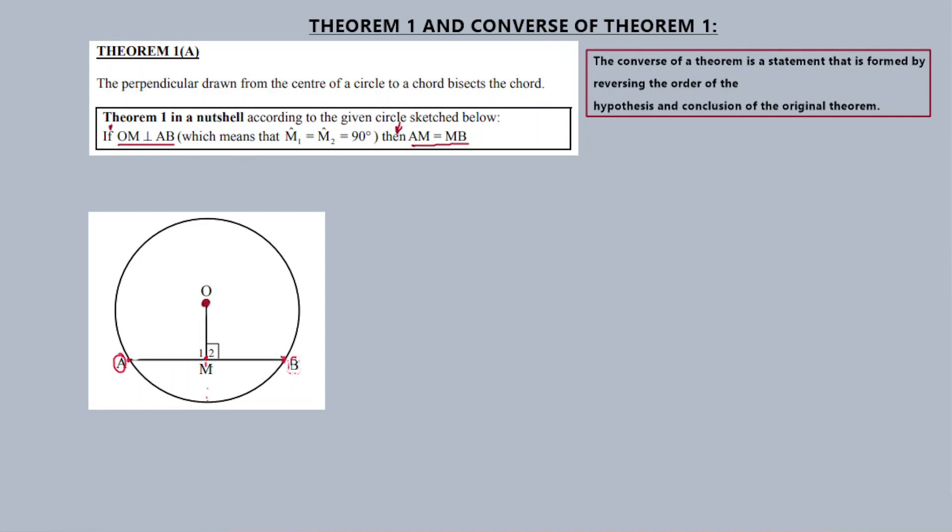Theorem 1, this is the original theorem. Given the perpendicular lines, this is the hypothesis: OM perpendicular to AB, and AB is a chord. We are required to find the conclusion. How do we prove this? We start off by joining OA and OB.